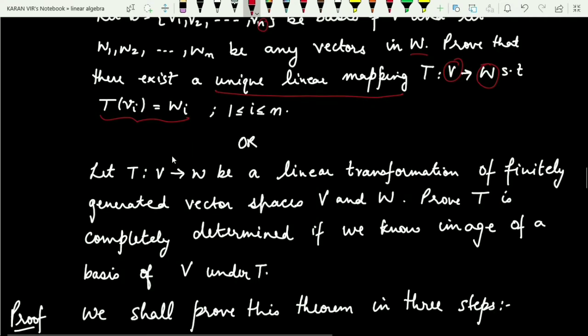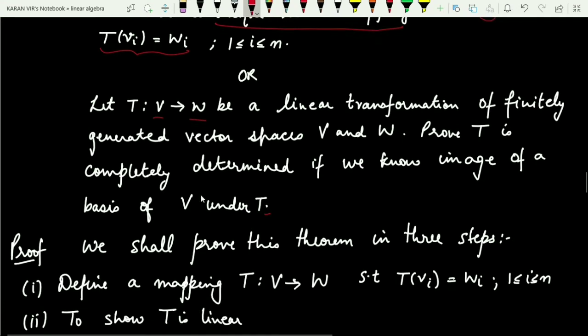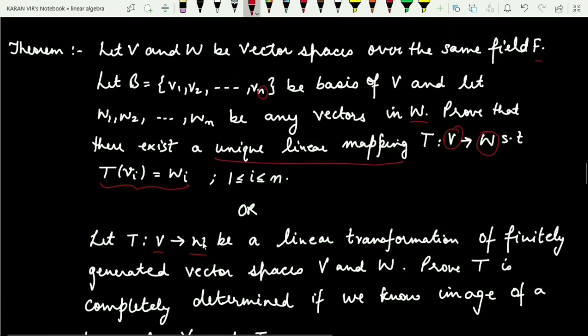Alternatively, if T is a linear transformation defined from V to W of finitely generated vector spaces V and W, then we need to prove that T is completely determined if we know the image of the basis of V under T. That is another way of stating the above theorem.